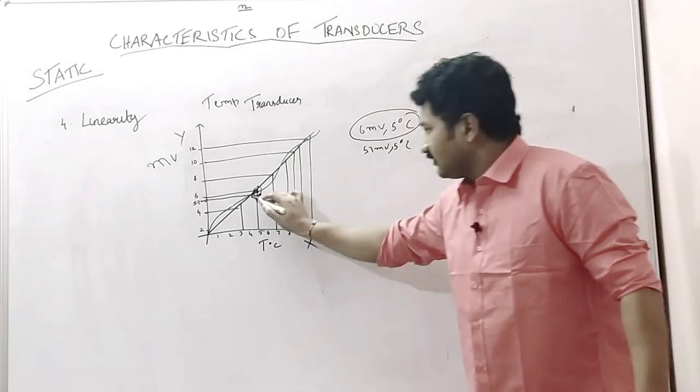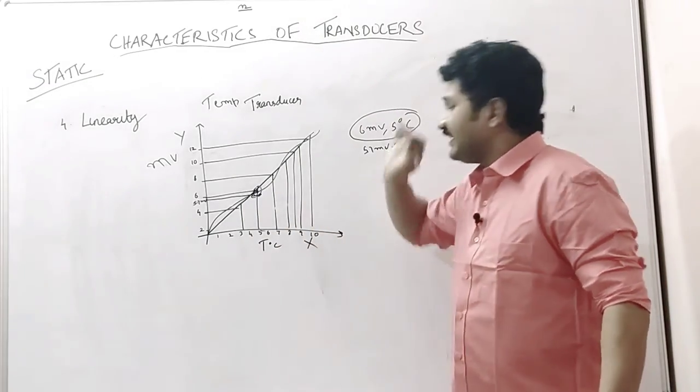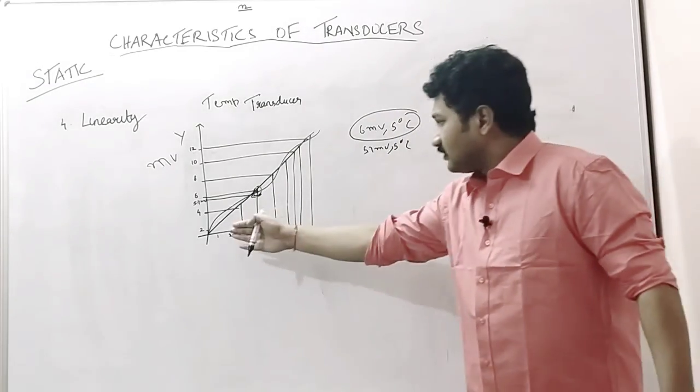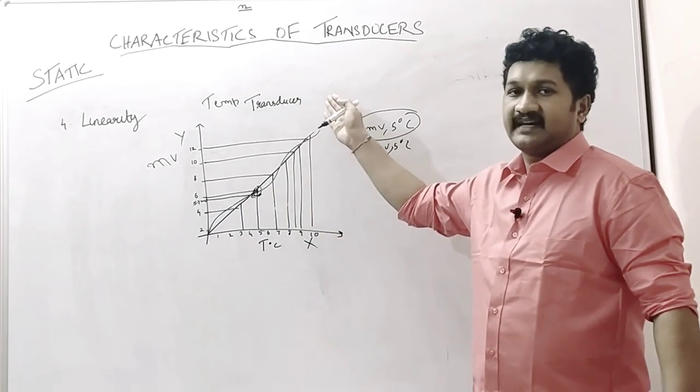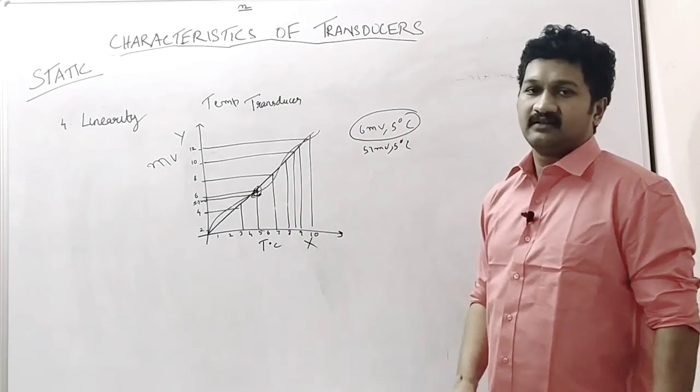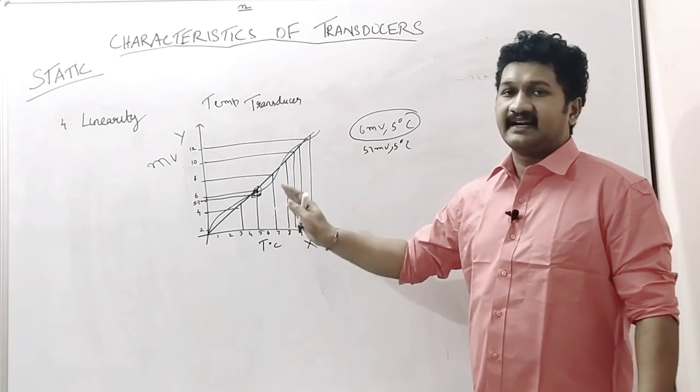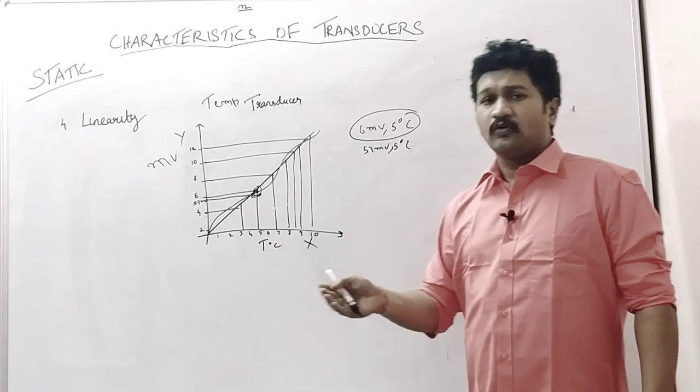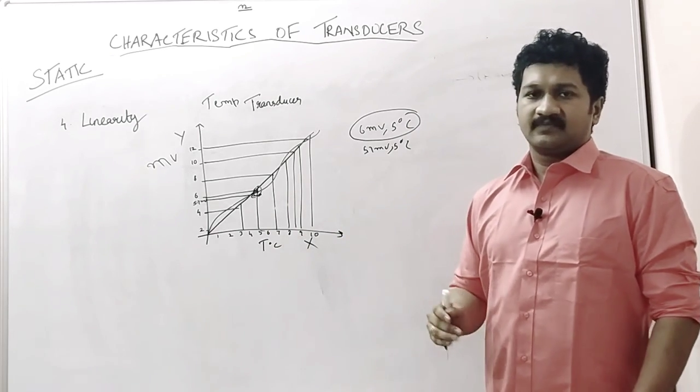This curve obtained shows a deviation in linearity. It is non-linear throughout the second transducer characteristics we measured. We should get the desired output for the given input. Thank you.